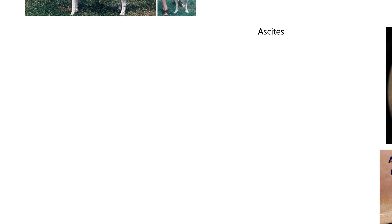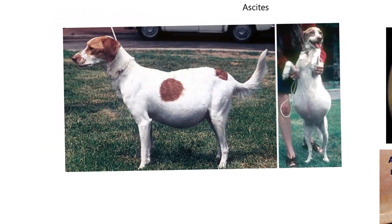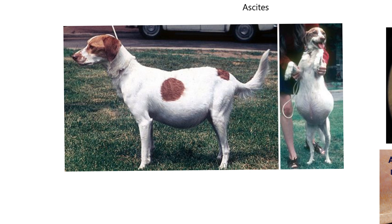Now we're on to another disorder of water balance called ascites — A-S-C-I-T-E-S — which means excess fluid collected in the abdominal cavity. Here's a dog with ascites in a lateral view; hopefully you can tell that's abnormal. If the dog's not pregnant and you've got water in the belly, and if the animal is standing on its two back legs, you get this bulging appearance — that's ascites.